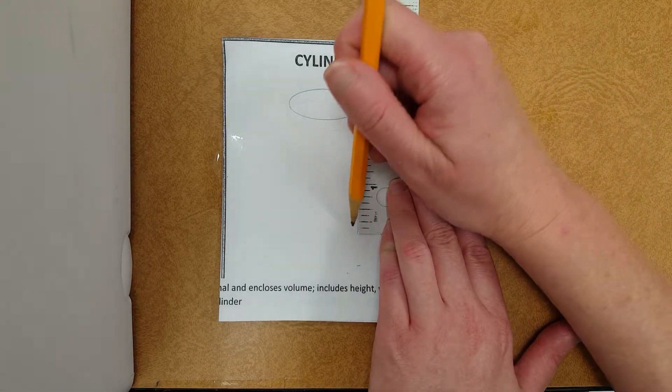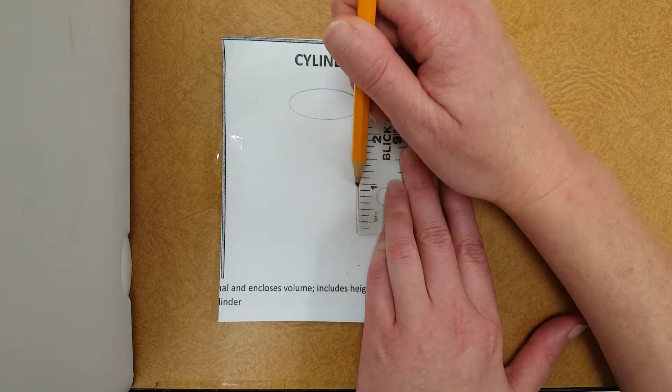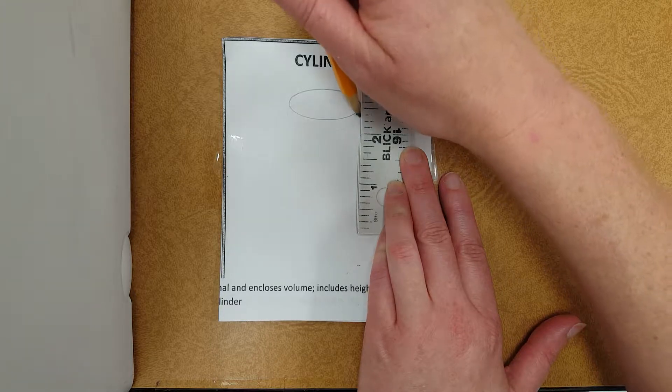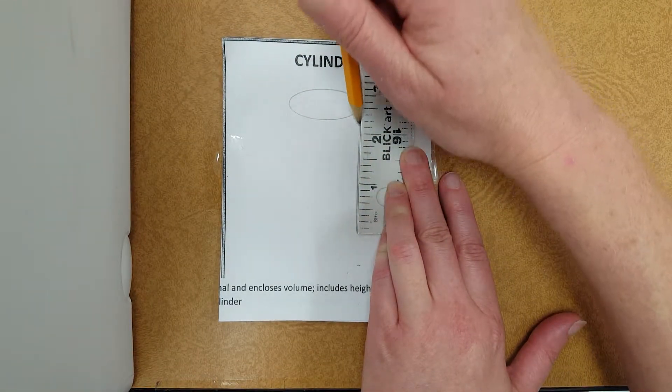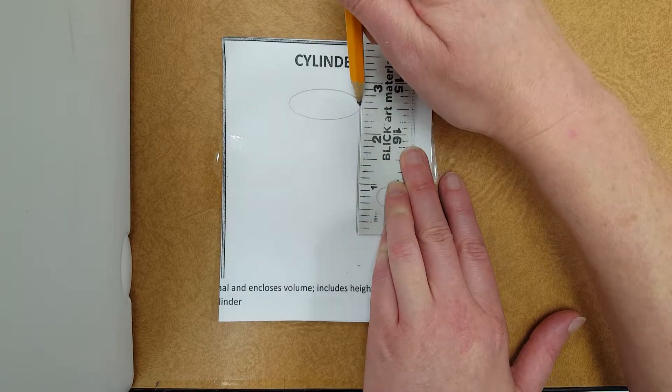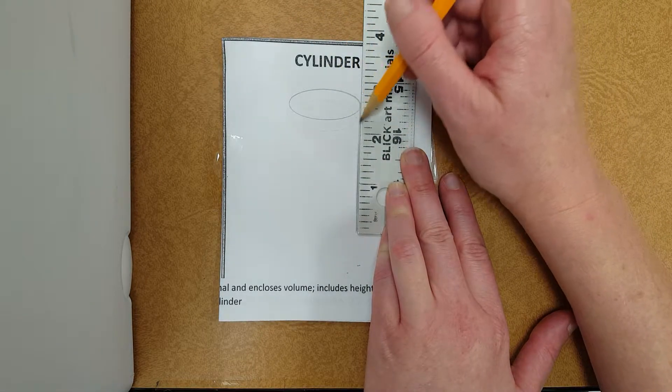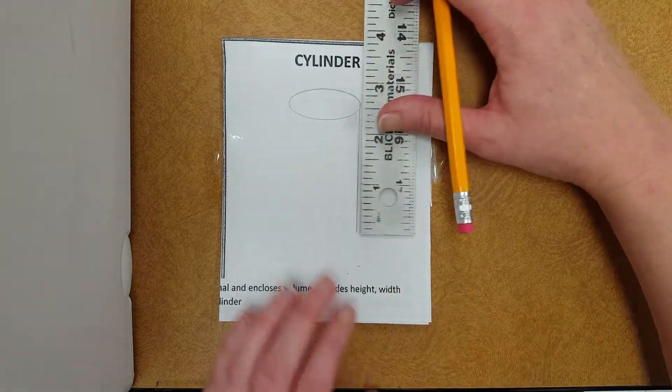All right, so kind of coming down from the very, very end of this other part, that ellipse, I have two and a half inches worth. I'm going to shift this over.